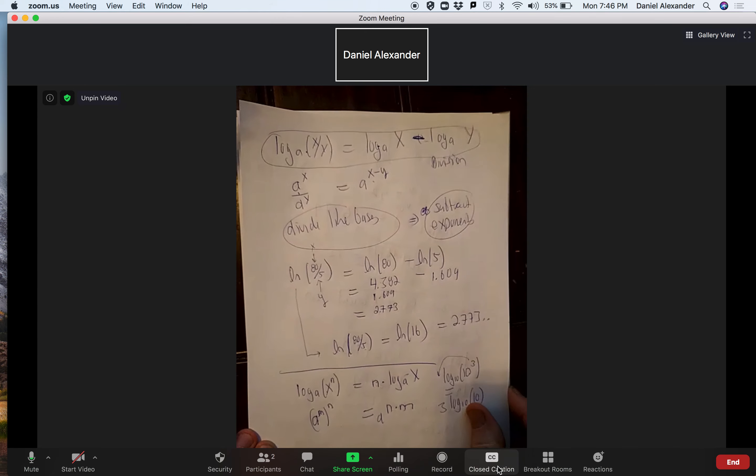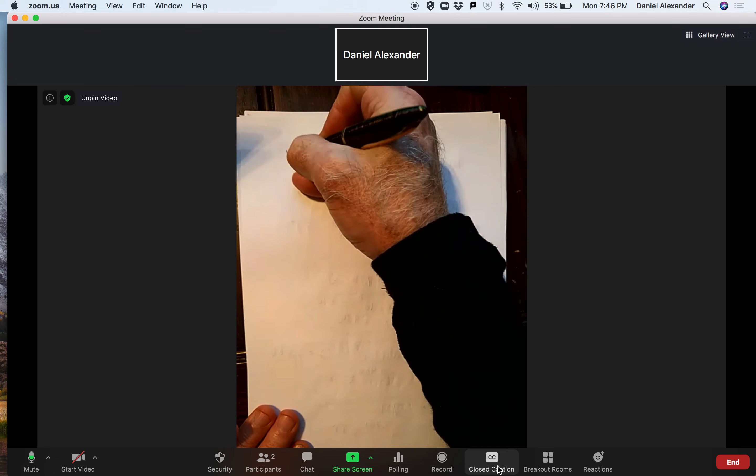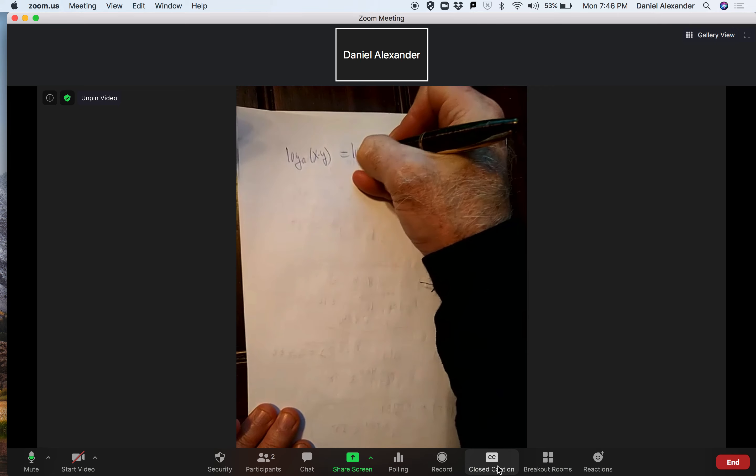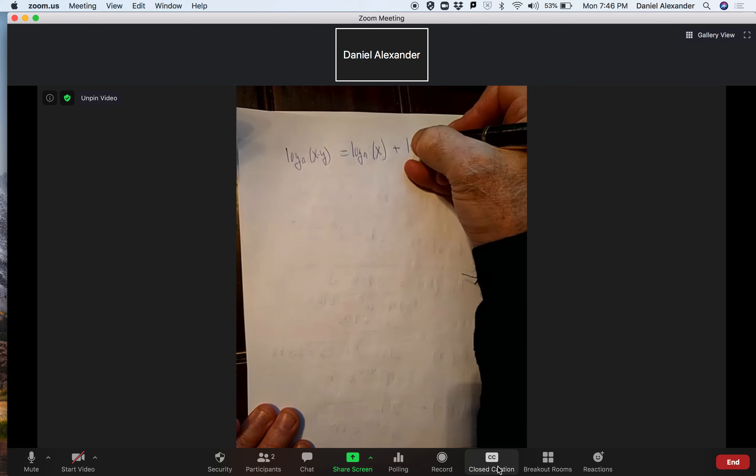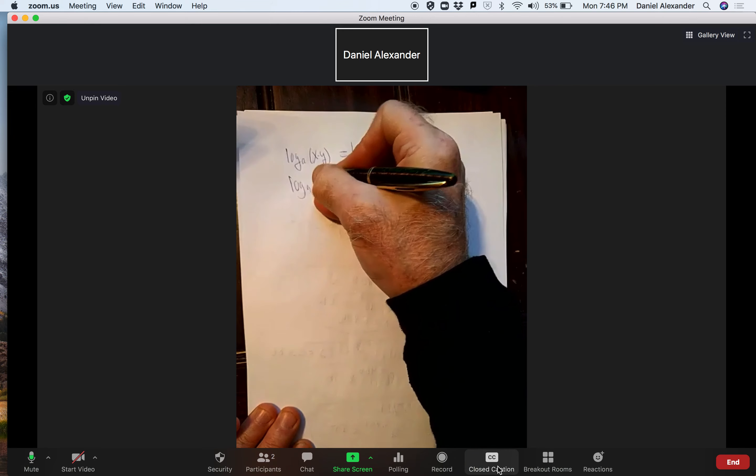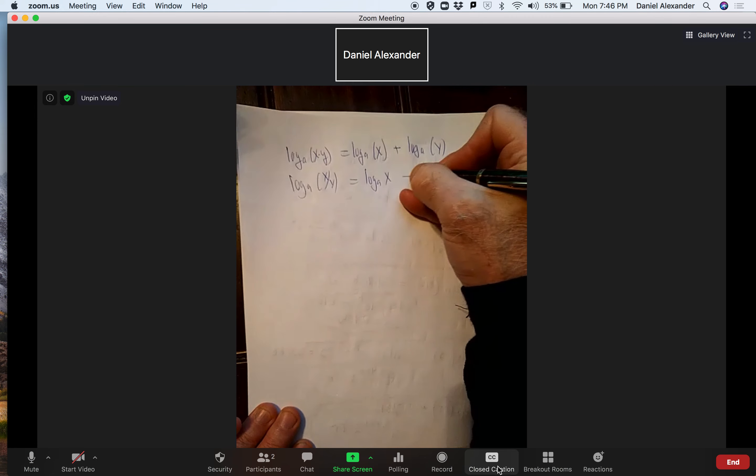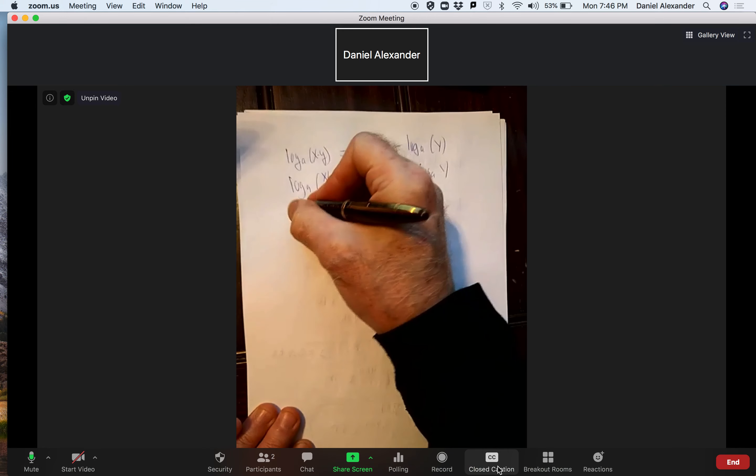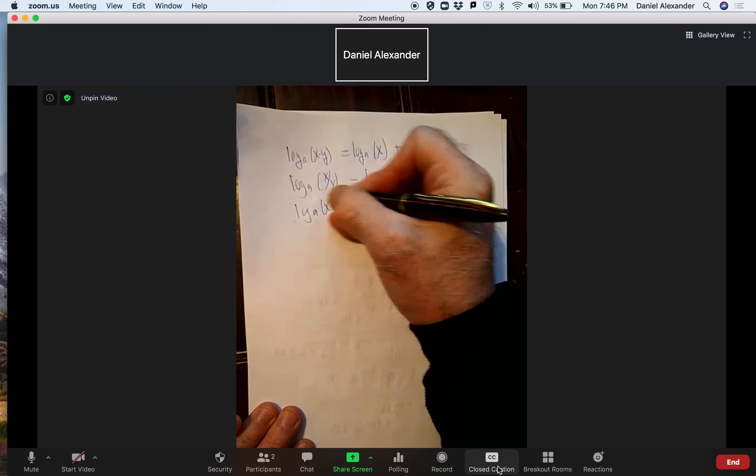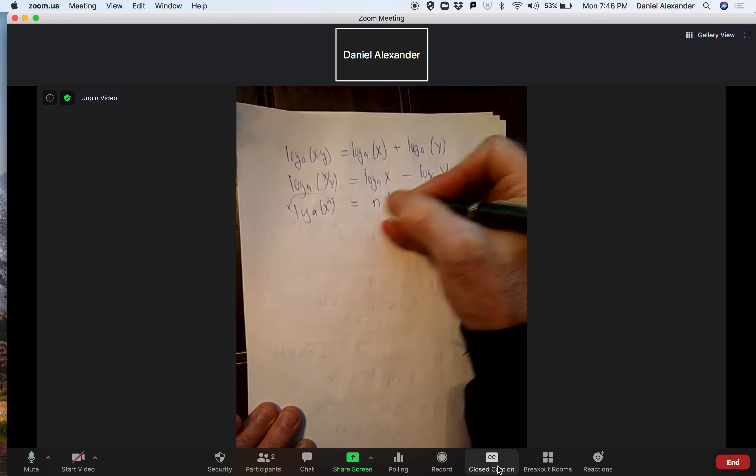So here we have the three rules. I'll write them again. The multiplication rule says when you multiply, you add exponents. When you divide, the division rule, you subtract exponents. And when you have a power to a power, you bring the exponent out in front. So those are the three rules.